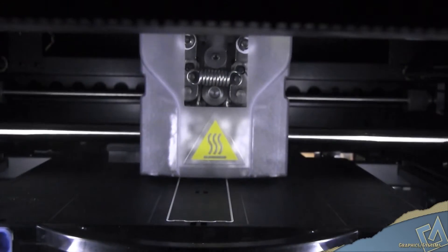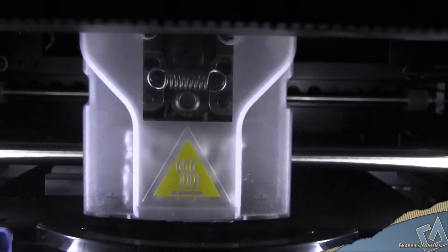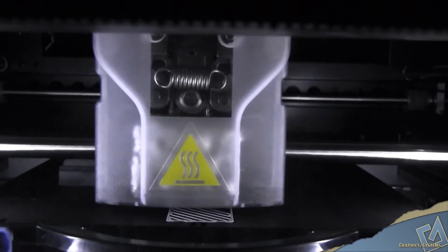Before when we outsourced our prototypes, you're looking at hundreds to potentially thousands of dollars. Whereas in-house with the 3D Fortis printer, we're looking at less than $50, less than $20, all depending on what we're making. So the cost has been really a great savings for the company.